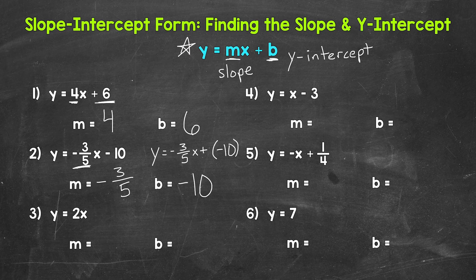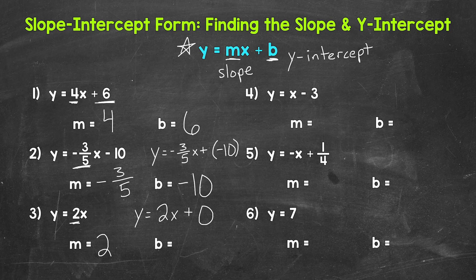Let's move on to number three, where we have y equals 2x. Our slope is 2. But what about the y-intercept? We only have 2x here. We can rewrite this as y equals 2x plus zero — our y-intercept is zero. Adding zero doesn't change the value of anything, so this can just be written as y equals 2x. Whenever you see something like this, the y-intercept is zero. Feel free to rewrite the equation with plus zero to make that y-intercept clear.